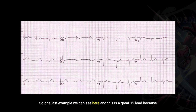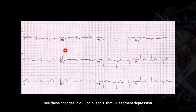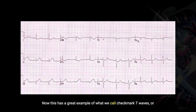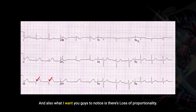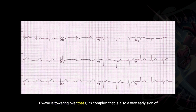One last example — this is a great 12-lead because when we are evaluating a 12-lead for early signs of ischemia, if we see these changes in AVL or in lead 1, that ST segment depression or T wave inversion, it should draw our eyes to the inferior leads. This has a great example of what we call checkmark T waves, or straightening of the ST segment as it comes off of the QRS complex. It almost looks like a checkmark coming off of leads 2, 3, and AVF. Also notice there's loss of proportionality — look at this tiny little QRS complex in AVF. If the T wave is towering over that QRS complex, that is also a very early sign of ischemia.